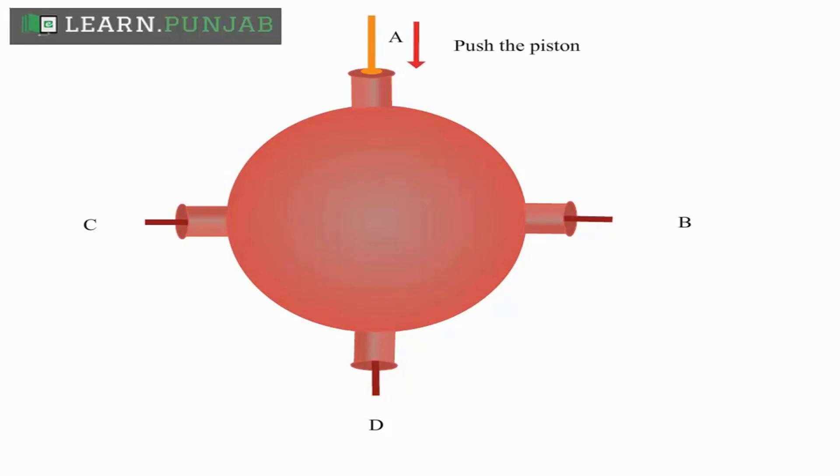When pressure is being applied on piston A, this is being transferred to all other pistons. In result, pistons B, C, and D are displaced outside.